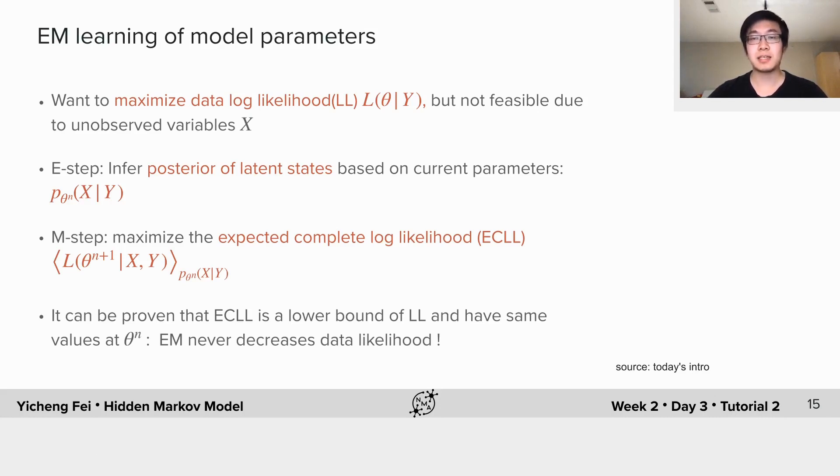So in the M-step, instead of maximizing the data log likelihood, we maximize the so-called expected complete log likelihood or ECLL under the posterior we just got from the E-step. It can be proven that the ECLL is actually a lower bound of the data log likelihood and they agree with each other at θ^n as shown here. So intuitively you can see that a full EM cycle will never decrease and usually will increase the data log likelihood.